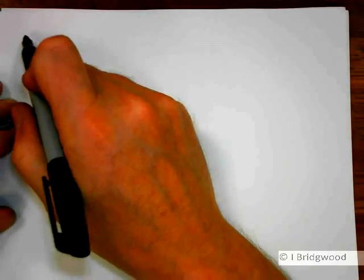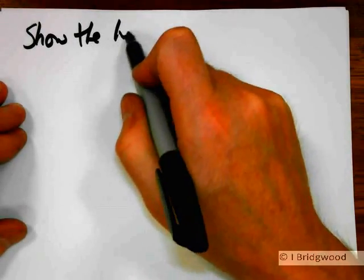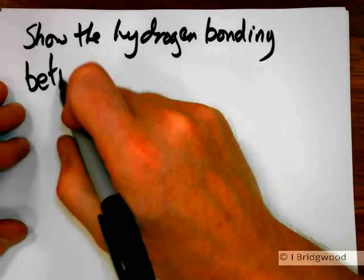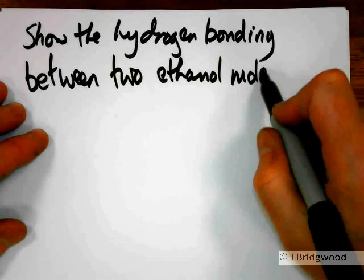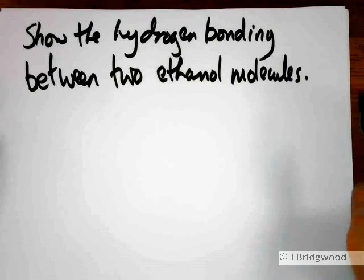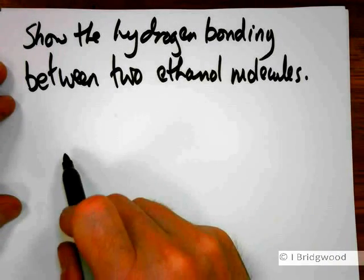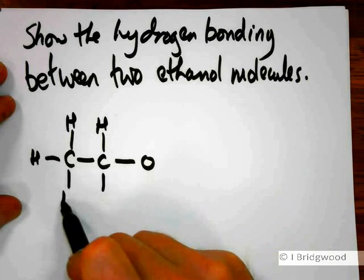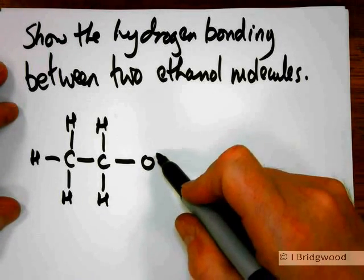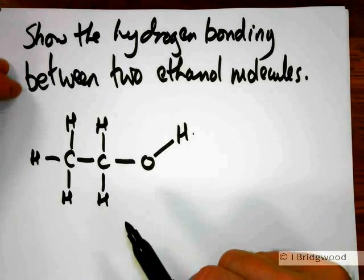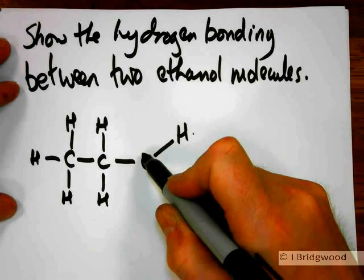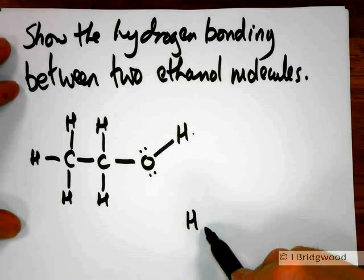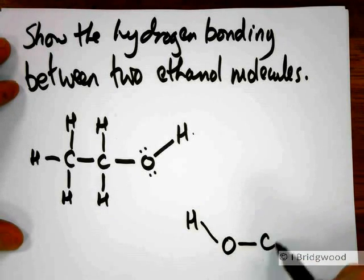You might get a question that says: show the hydrogen bonding between two molecules. Remember the requirements for hydrogen bonding — we need to have an electronegative element. Carbon and hydrogen are not electronegative elements; oxygen is. So we have one requirement: we've got to have oxygen with an available lone pair of electrons — of course it has two lone pairs of electrons — and we must have hydrogen attached to an electronegative element.